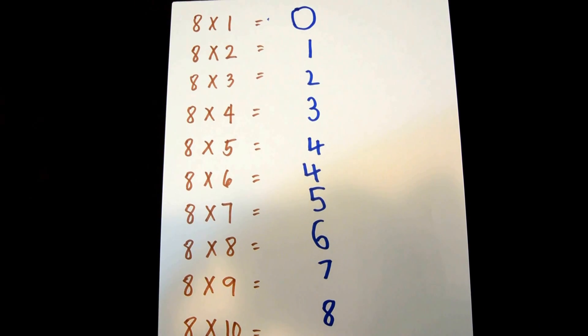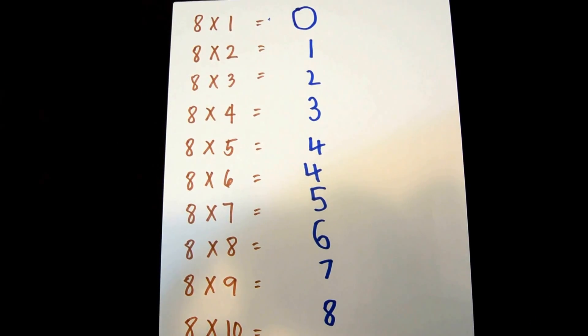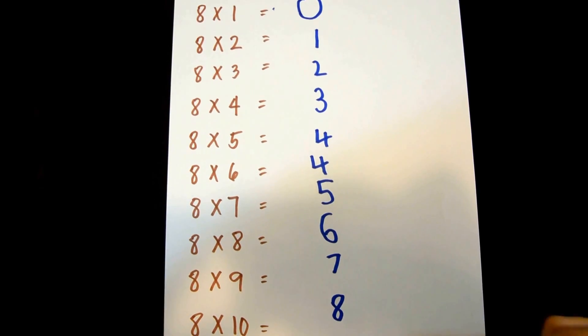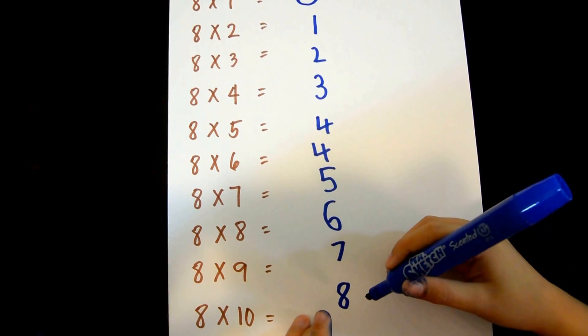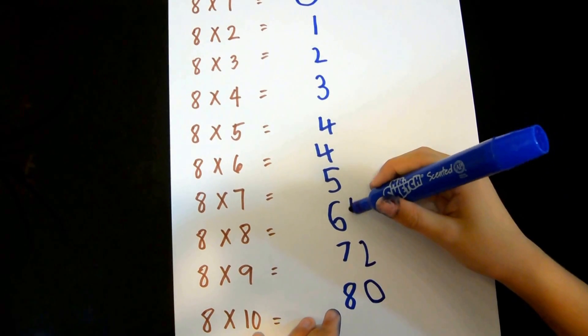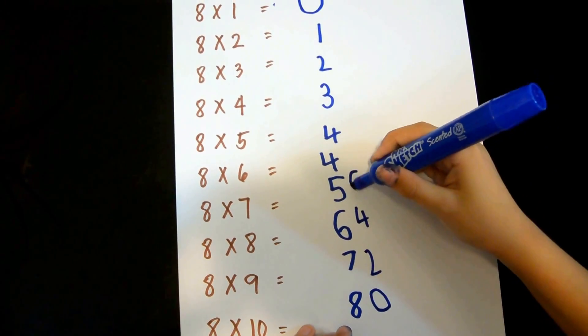use even numbers from 0 to 8, then repeat it up to the top like this: zero, two, four, six